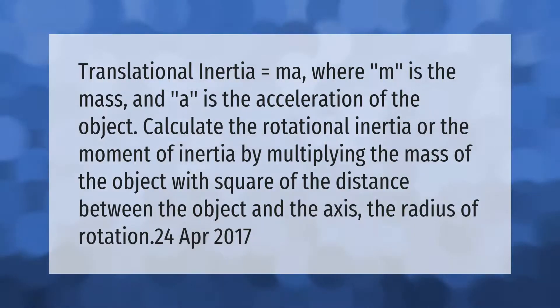Translational inertia equals ma, where m is the mass and a is the acceleration of the object. Calculate the rotational inertia or the moment of inertia by multiplying the mass of the object with square of the distance between the object and the axis, the radius of rotation.